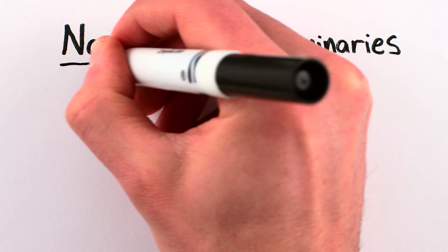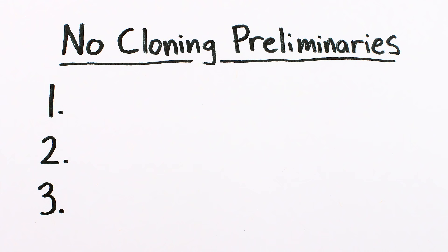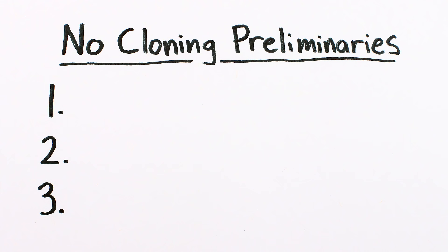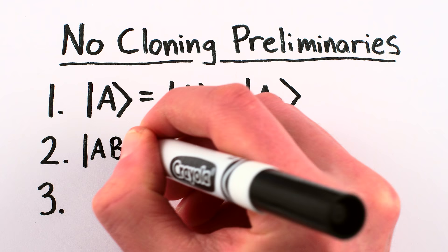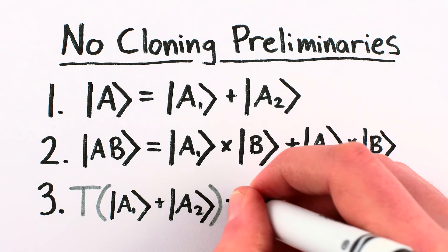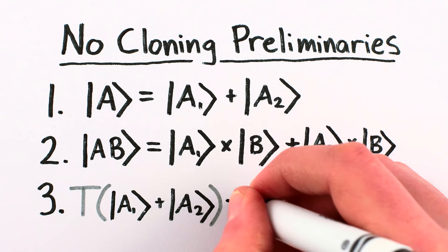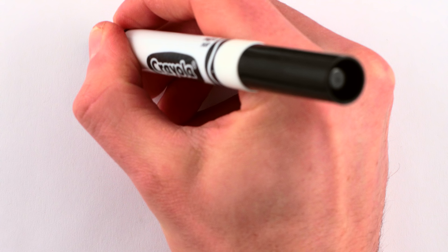So let's recap. For the no-cloning proof, we'll use three of the properties that all fundamental particles in the universe obey. Individual particles can be in superpositions, which looks like adding. Groups or combinations of particles are products of their components, or sums of products of their components, which looks like multiplying. And any transformation of a particle or group of particles is the same as the sum of the transformation applied to the parts, which looks like distributing. Okay, now we've got that out of the way, we can get into the meat of the proof.